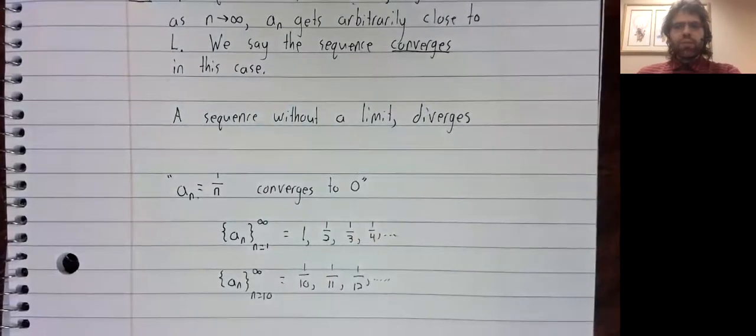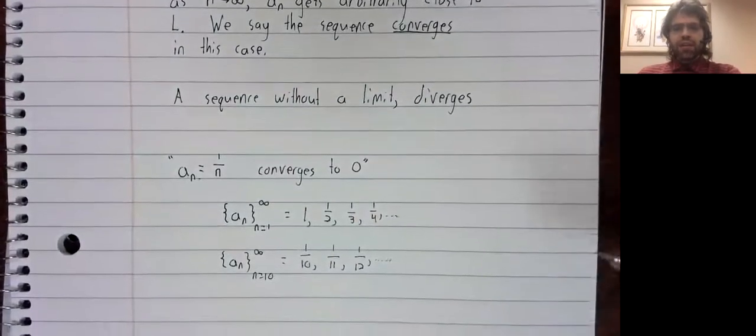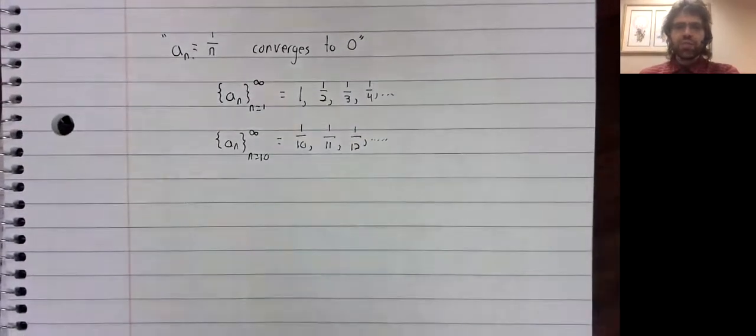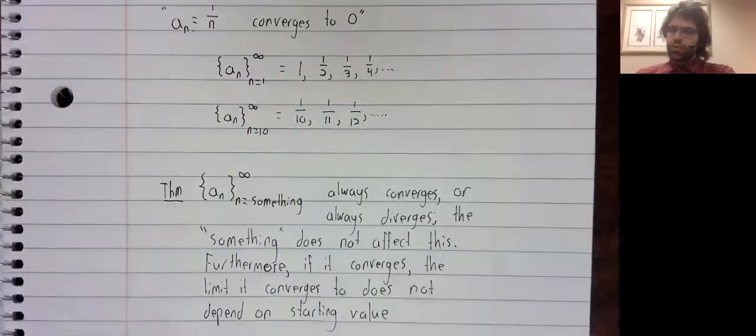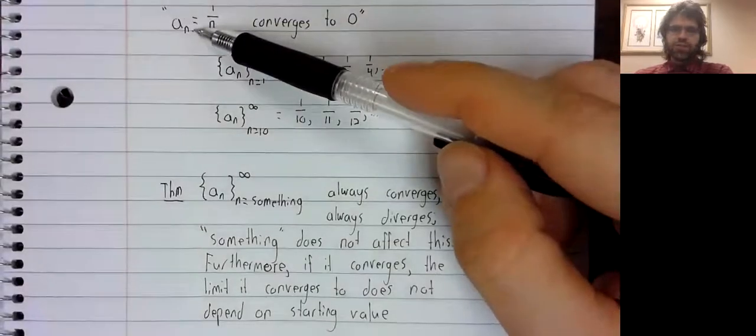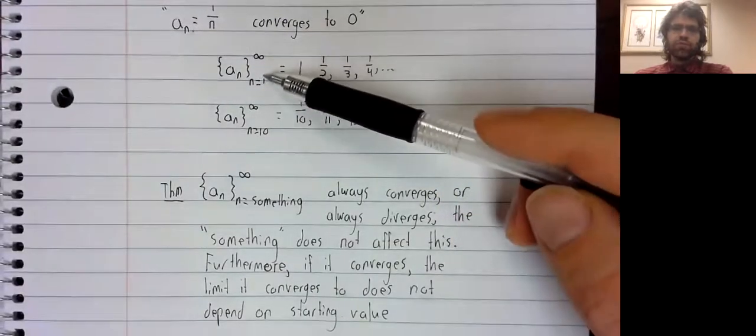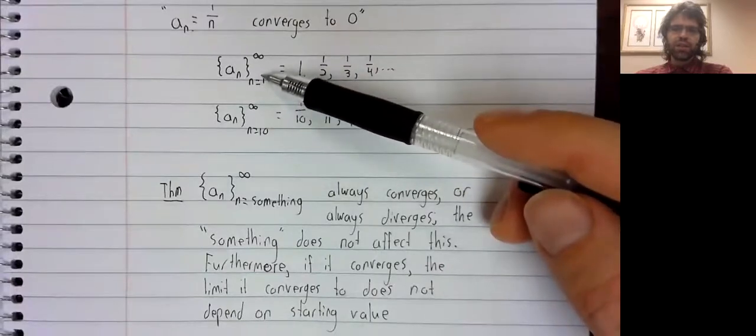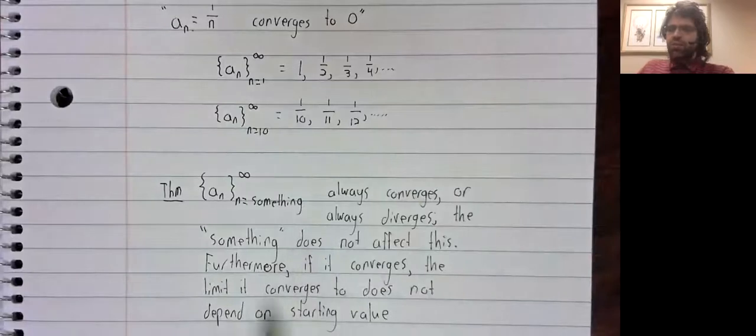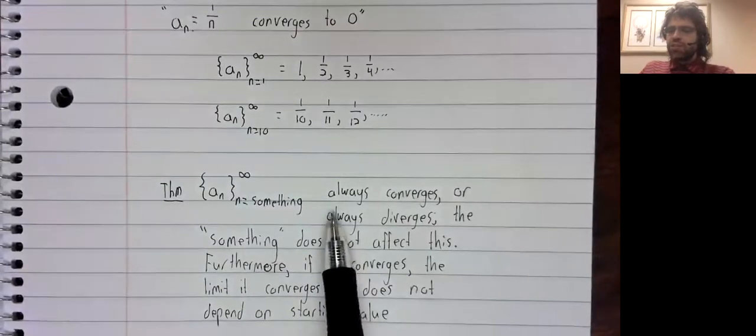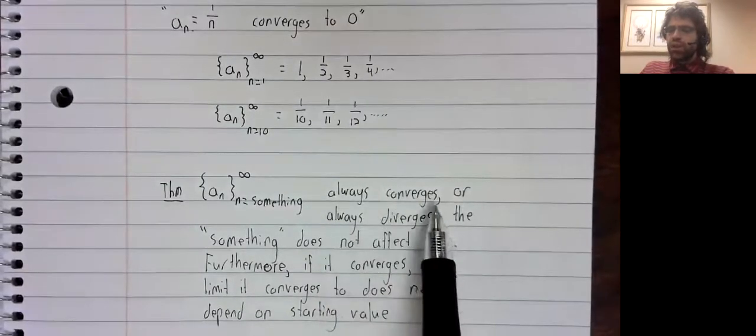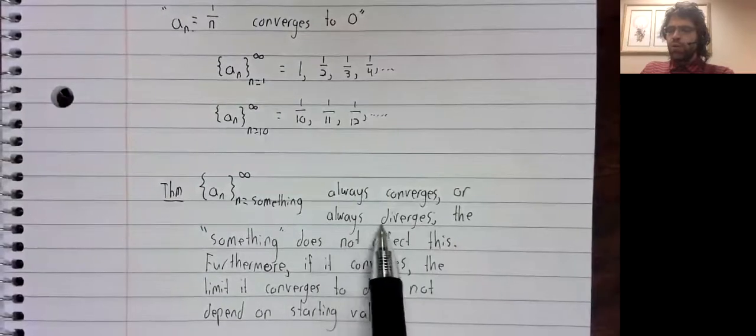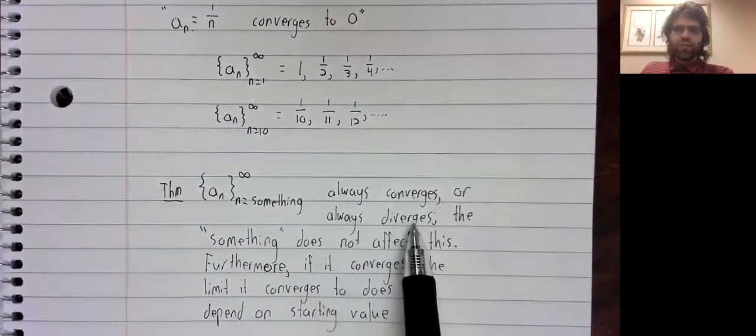We can get away with that kind of sloppiness because of the following theorem. It is true that something like this can be used to define multiple sequences. However, these multiple sequences either always converge or always diverge.